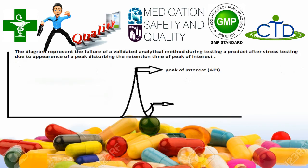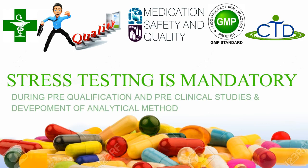The degraded impurities in the pharmaceutical product may interfere with or disturb the retention time of the peak of interest in the chromatographic results. As shown on your screen, it may happen that due to degradation, the peak of the impurity may appear in the chromatogram at the same retention time as your peak of interest, causing results to fail in the specificity test of analytical method validation.